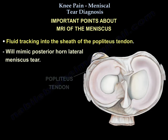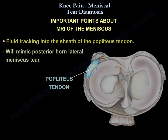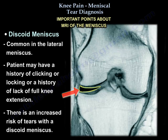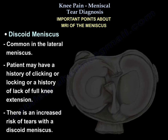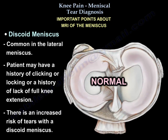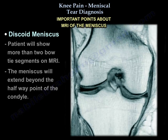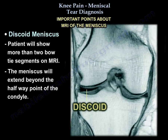Additionally, fluid tracking into the sheath of the popliteal tendon will mimic a posterior horn lateral meniscus tear. Discoid meniscus is common in the lateral meniscus. The patient may have a history of clicking, locking, or lack of full knee extension. The patient will have more than two bow ties on MRI, and the meniscus will extend beyond the halfway point of the condyle.